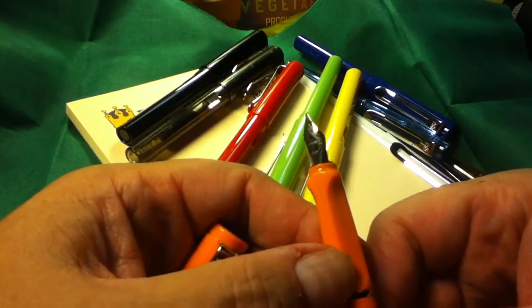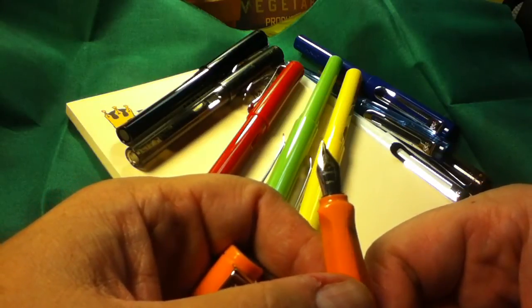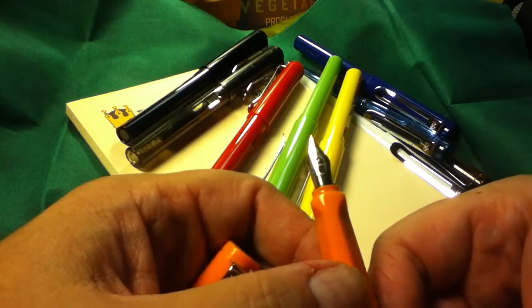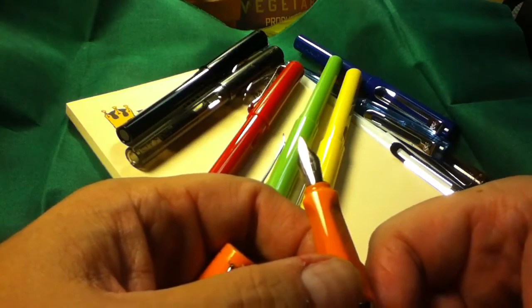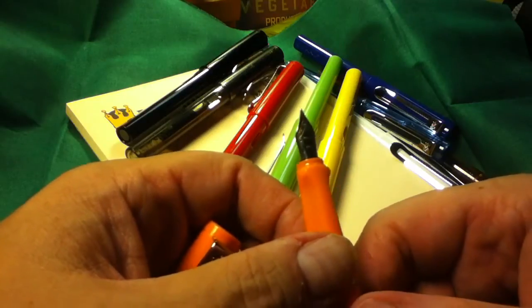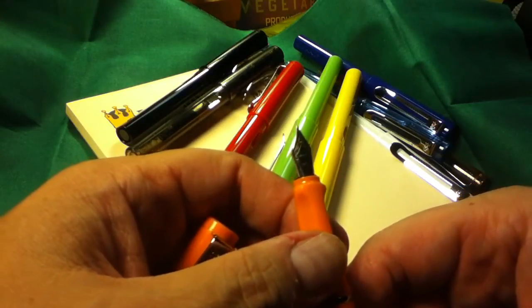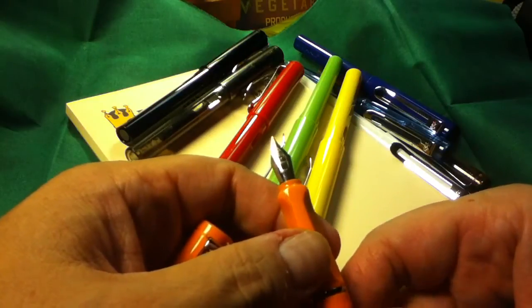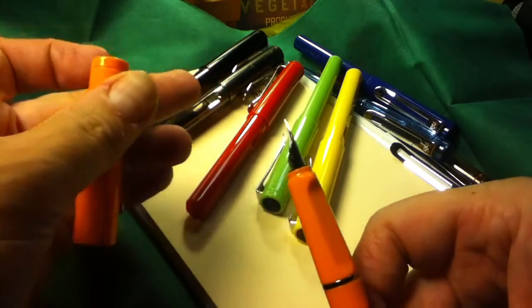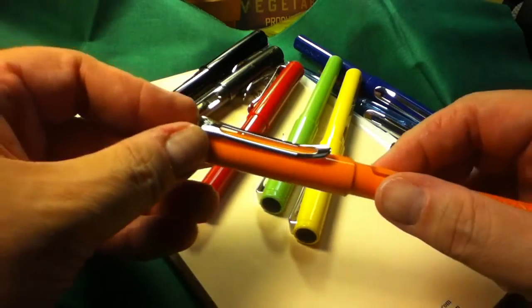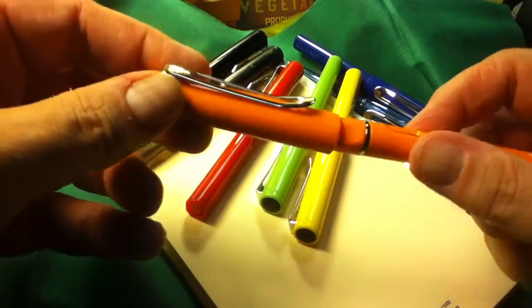The nib has Jinhao and it's a spear type nib as you can see with a breather hole and their usual 18KGP standing for 18 karat gold plated. It's a steel nib, whether it's actually been gold plated only they know for sure. It recaps with a satisfying click.